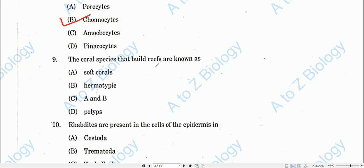Question number nine: The coral species that build reefs are known as hermatypic corals — these are the hard reef-building type. Soft corals are soft gels and polyps, but the hard reef-builders are hermatypic. Option B will be the correct one.